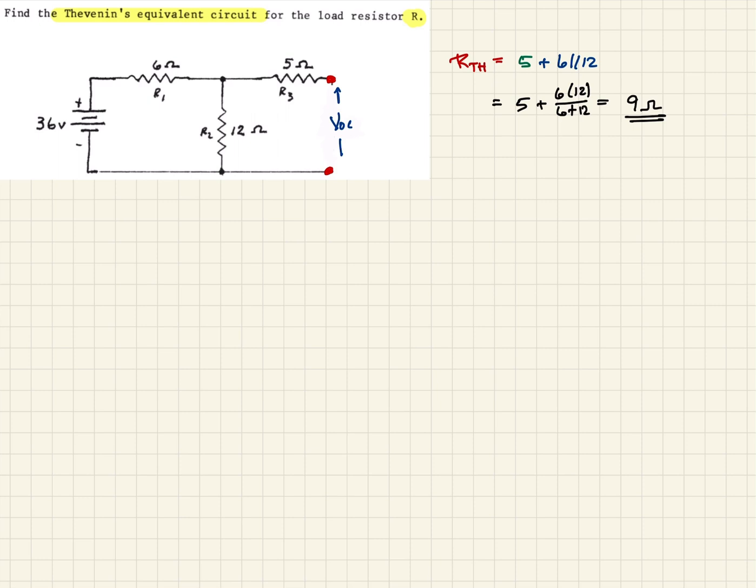So that's the voltage drop basically across this R2 because there's no current. With this thing open circuited, there'll be no current flow here, so that doesn't contribute. So really, we're just looking for the voltage drop across this R2 circuit here. And so this is just a voltage divider, right?